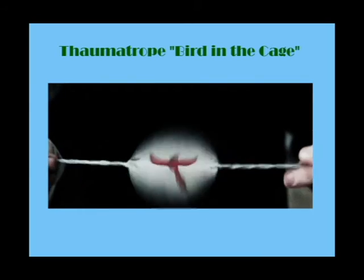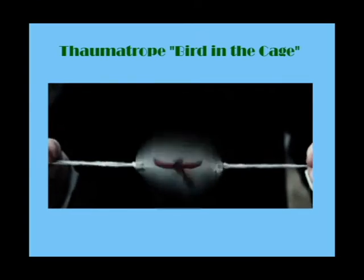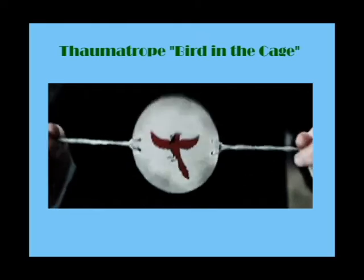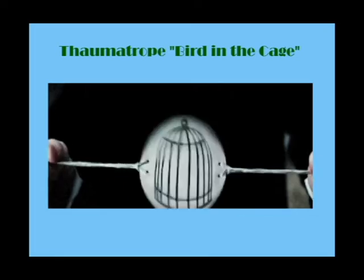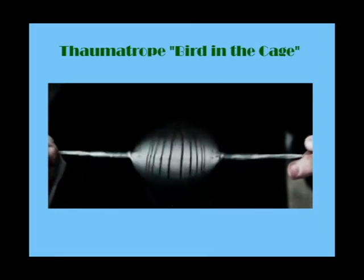Here's an example of positive after image: Thaumatrope bird in a cage. One side of the disc is a bird and the other side is a birdcage. By spinning the disc quickly, the two pictures appear to blend into one.